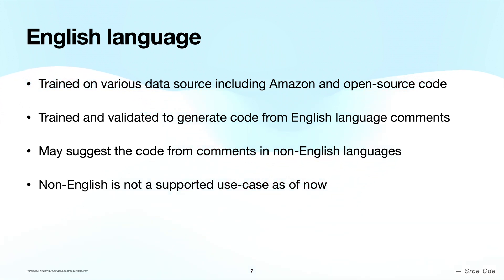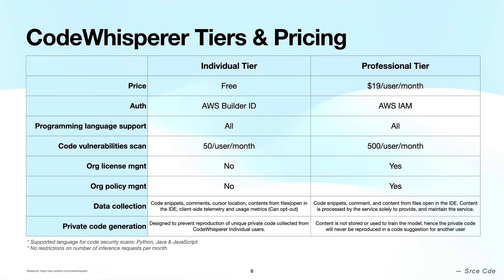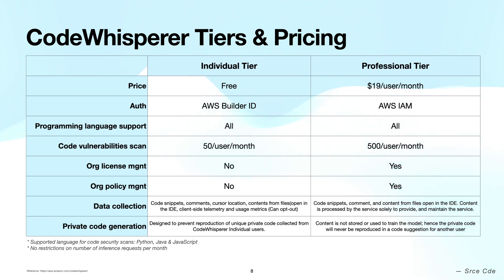Amazon CodeWhisperer comes in two tiers: Individual and Professional. The Individual tier is for individual developers, and the Professional tier is for organizations. The Professional tier offers administrative capabilities including organizational license management and organizational policy management to set service policies at the organizational level. With respect to pricing, the Individual tier is free for individual developers, whereas the Professional tier costs $19 per user per month.